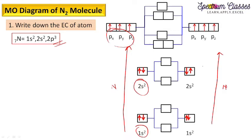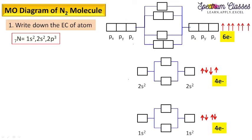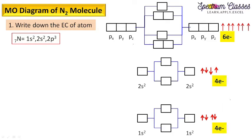Similarly, you draw the same for the other nitrogen atom on the right-hand side. Now simply count how many electrons there are: 2, 2, and 3 — so 7 electrons for one nitrogen. Similarly, the other nitrogen also has 7 electrons, giving a total of 14 electrons, so you will never make a mistake with electron counting.